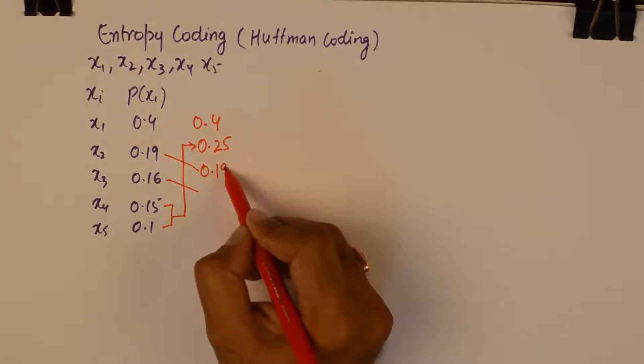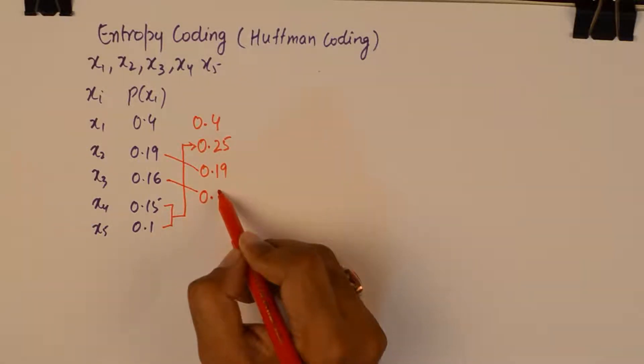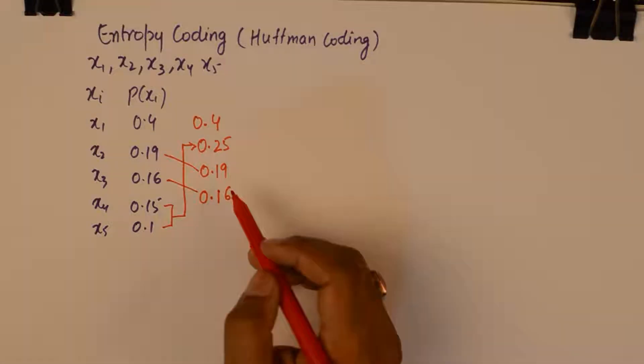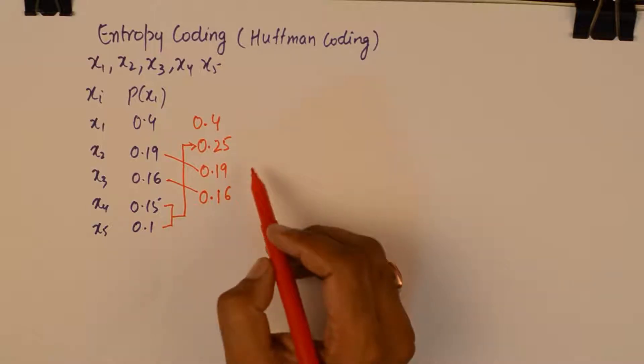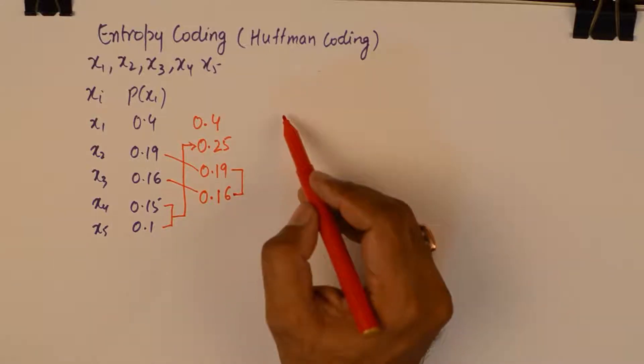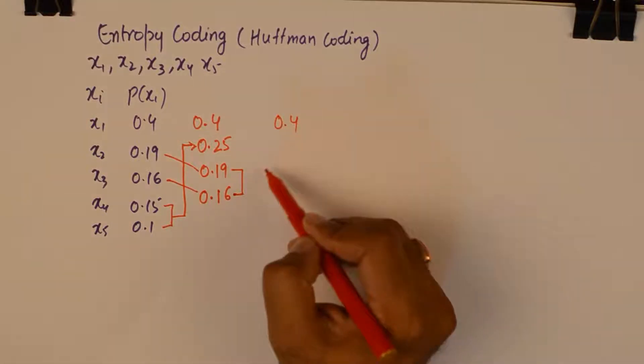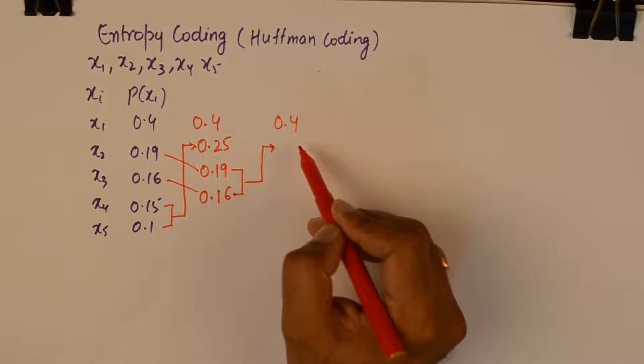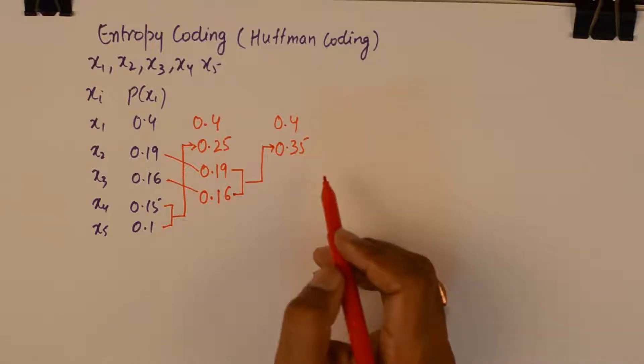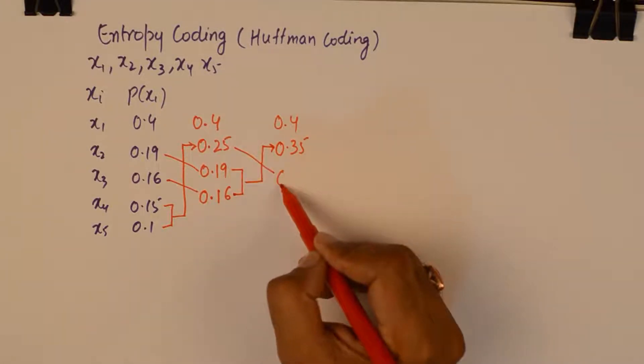So this gets shifted. So now the lowest two are 0.19 and 0.16. I will add them up which will result in 0.35. So that will also be placed underneath 0.4. So this one goes here.